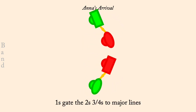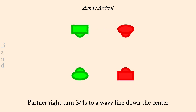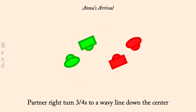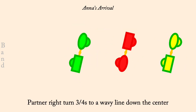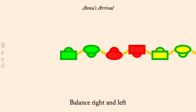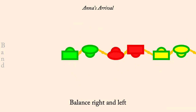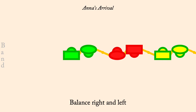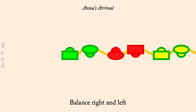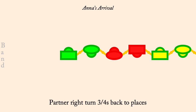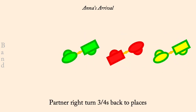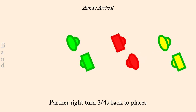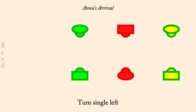Partner right three quarters to a wavy line. Balance right then left. Partner right three quarters to places. Turn single left.